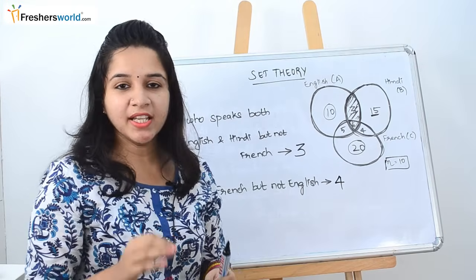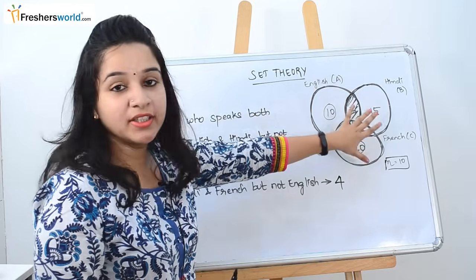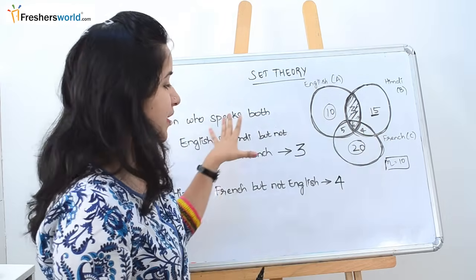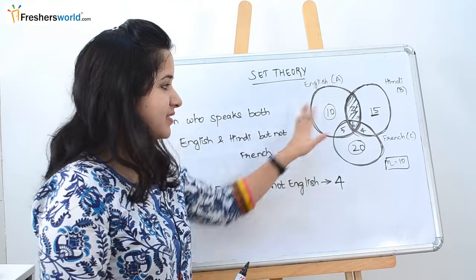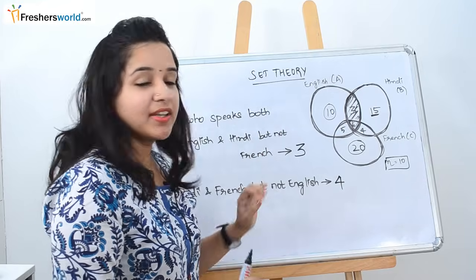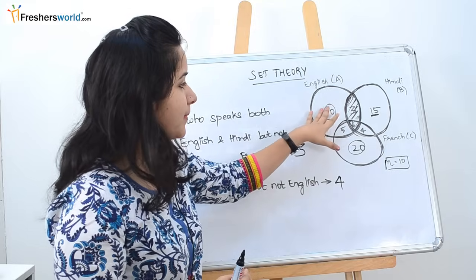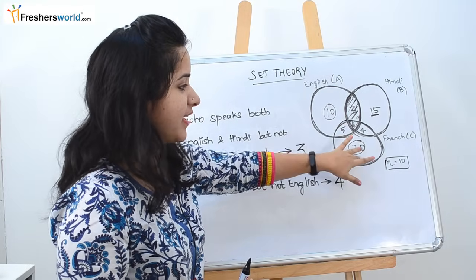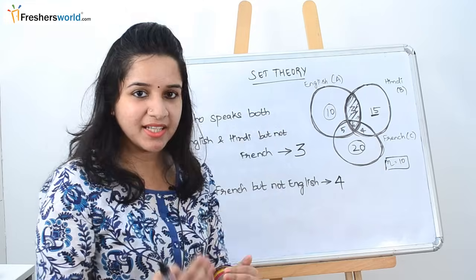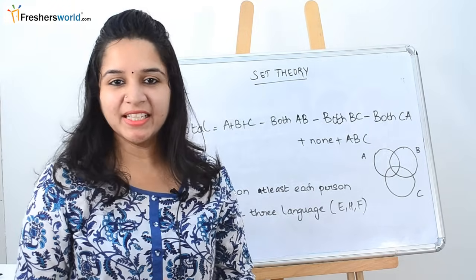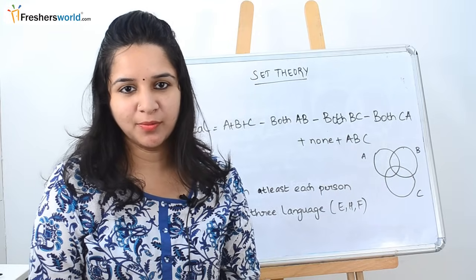These are the various types of questions you find in simple set theory problems. They will directly give you all the details in the Venn diagram, followed by a set of 5 or 6 questions from which you have to provide the answers. There are certain tougher-level problems where a lot of values will be missing, and you need to use the formula to find the rest of the details before answering the questions. As of now we dealt with a very simple problem.